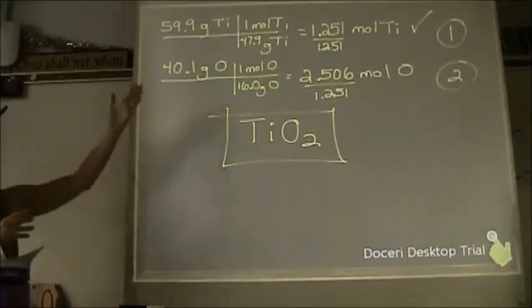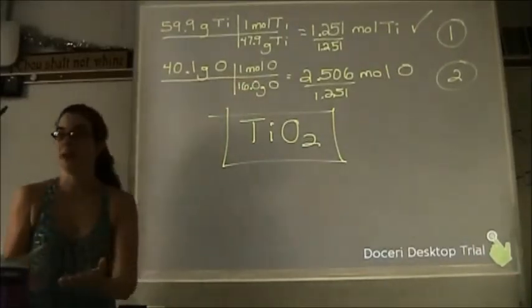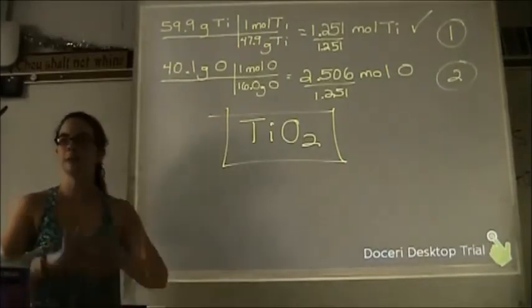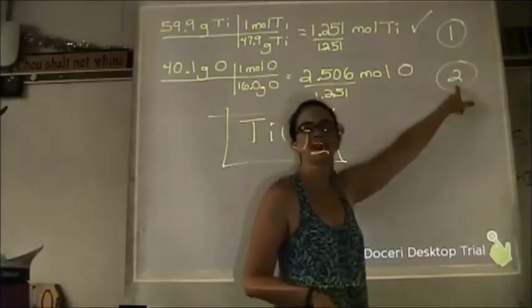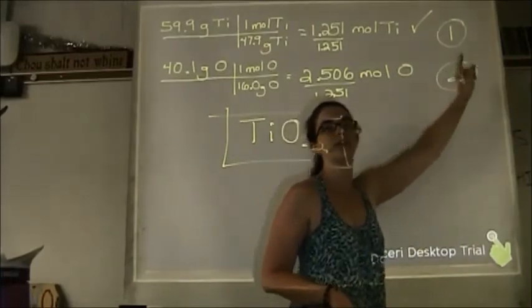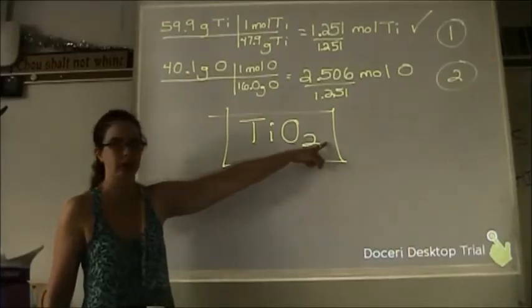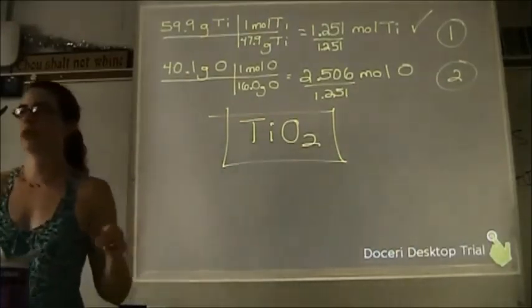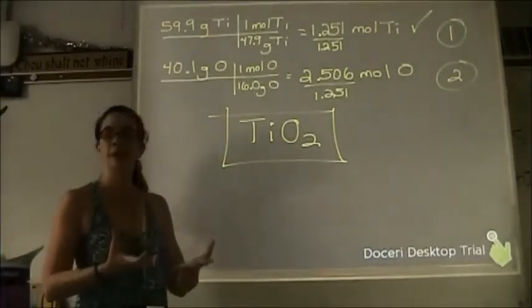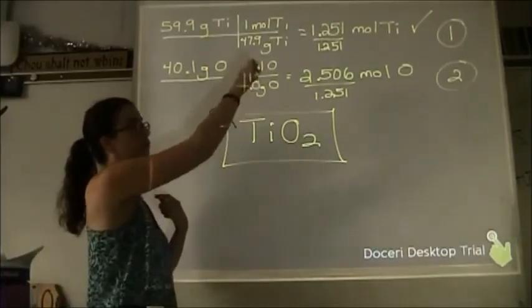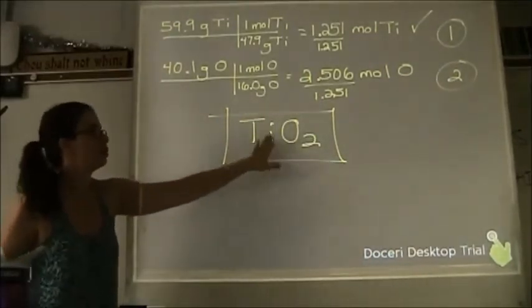The ratios won't always come out to be whole numbers. For example, let's say after the division step you get one and 2.5. You can't put 2.5 as a subscript. How do you fix that? Multiply both numbers by two — that would give you Ti₂O₅. What if you got 1 and 2.333? Multiply by three. What if you got 1 and 2.666? Multiply by three as well.